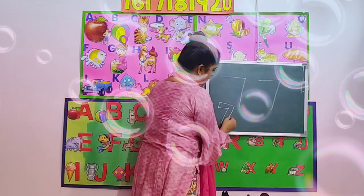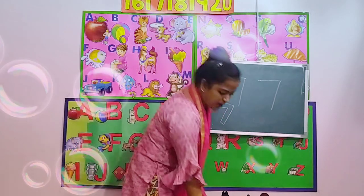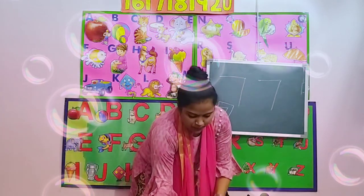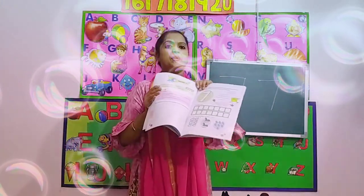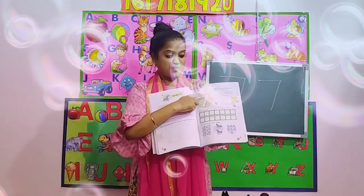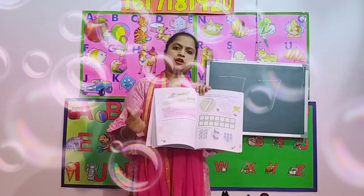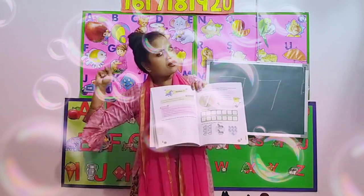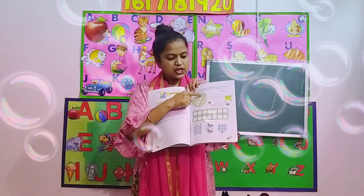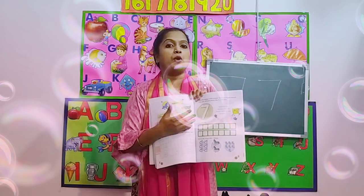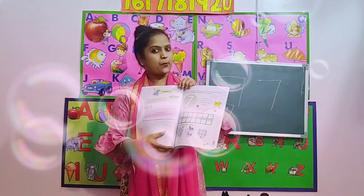Aaj hamei is seven number ko color karna hai. What do we have to do with number seven? In our work, you all have to take different, different crayons — different colors — and start tracing. Phir ye ban jayega rainbow number. Which number will it become? Rainbow number.